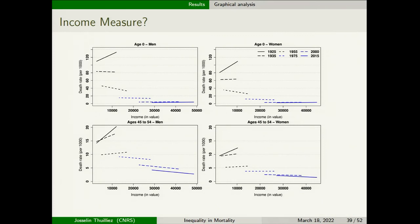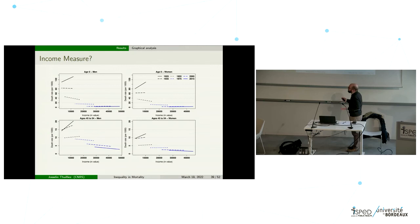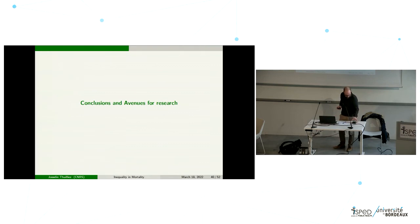As a robustness check, we also tested whether this is due to income in value or income in rate. If we take income in value instead of ranking by rate of income, we still find the same reversal of the gradient over time.